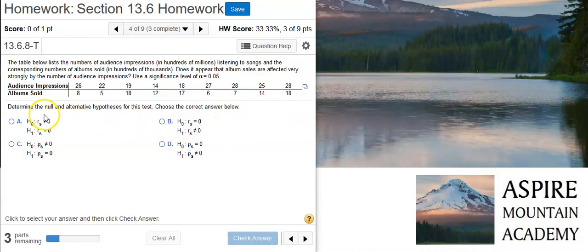Okay, the first part of this problem is asking for null and alternative hypotheses. And for a Rank Correlation Test, that's pretty much going to be set. The null hypothesis is going to say there is no correlation, so it's going to be equal to zero. And the alternative will be that there is correlation, so the correlation coefficient will not be equal to zero.